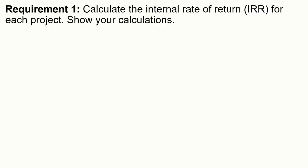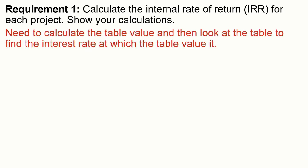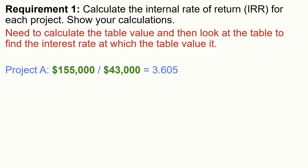Requirement one: calculate the internal rate of return for each project and show calculations. Because cash flows are the same each year for both projects, we can use the present value of an annuity table. The IRR is the interest rate at which the present value of the project is zero. We calculate the present value factor, then find the interest rate for five years with the closest table value. For Project A, the initial investment is $155,000 and cash flows are $43,000 per year. Dividing 155 by 43 gives a table value of 3.605.